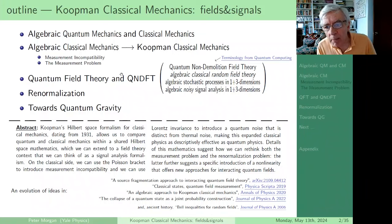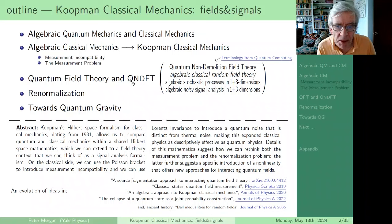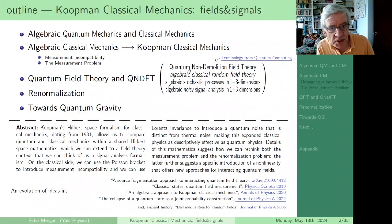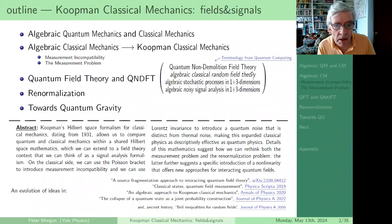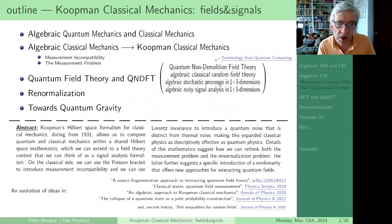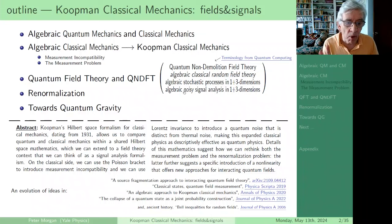I'm going to think about quantum field theory and about what I'm going to call quantum non-demolition field theory — terminology that comes from quantum computing — which means that QNDFT is a commutative, very classical-seeming algebraic approach to effectively classical random field theory. Or we can think of it as an algebraic approach to stochastic processes in 1+3 dimensions, or noisy signal analysis in 1+3 dimensions.